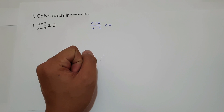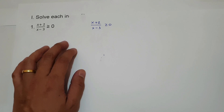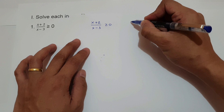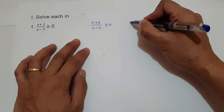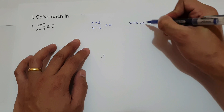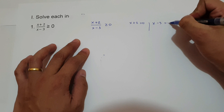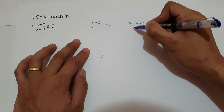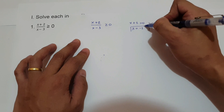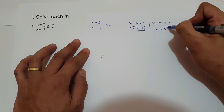The first step that we're going to do in order to solve these rational inequalities is we're going to equate the numerator and denominator in terms of 0. So that is x plus 2 equals 0, and x minus 3 equals 0. To simplify, x equals negative 2, and x equals positive 3.